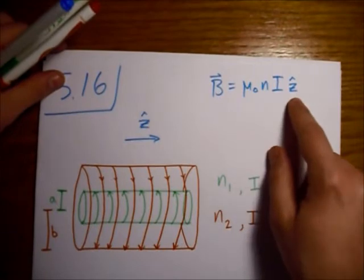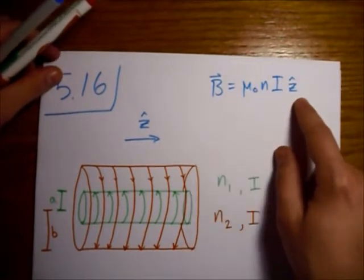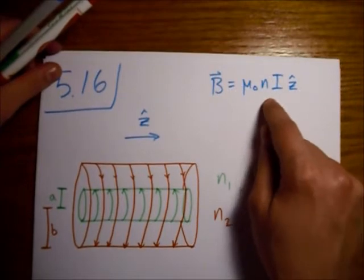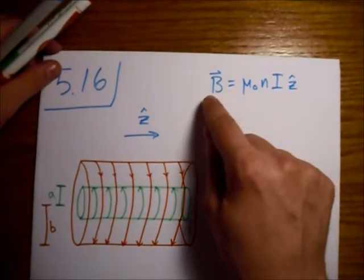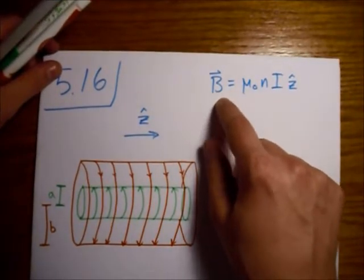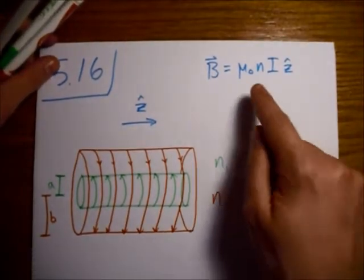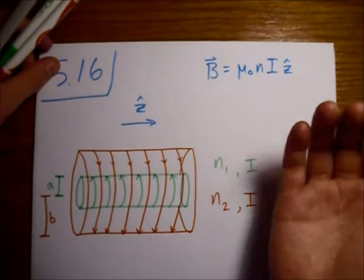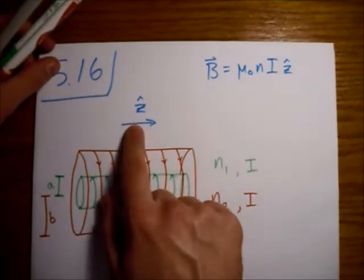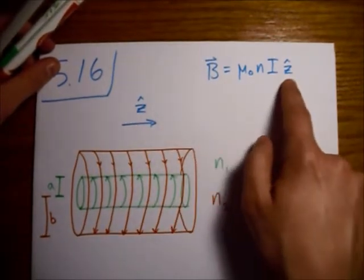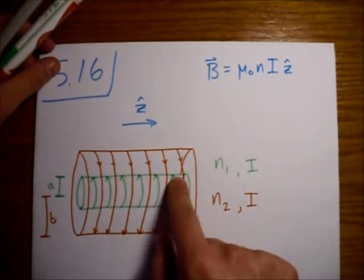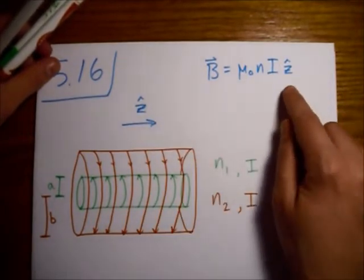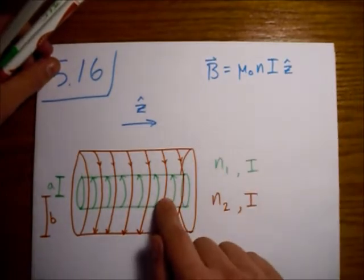Now we're going to use the magnetic field. This is the magnetic field inside a solenoid, and I have this written as z-hat, so using the right-hand rule, this would apply for the red one. For the green one we'll get a minus sign because the current is going in the other direction.